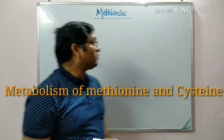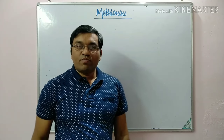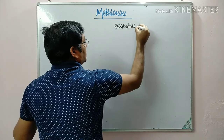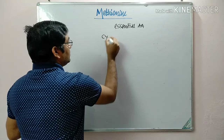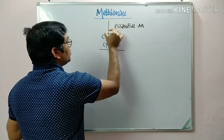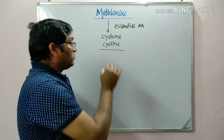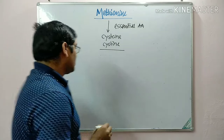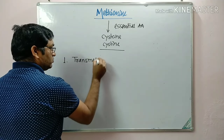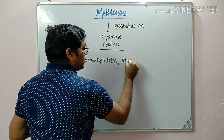Good morning friends. Today we will discuss the metabolism of methionine, which is an essential amino acid, and also the metabolism of cysteine and cystine. These are considered together because methionine is ultimately converted into cysteine, and two molecules of cysteine will give cystine. We will discuss methionine metabolism under three headings: transmethylation reaction and conversion of methionine into homocysteine.